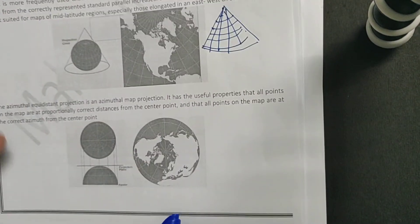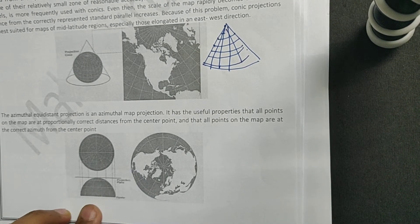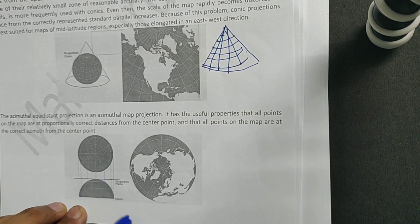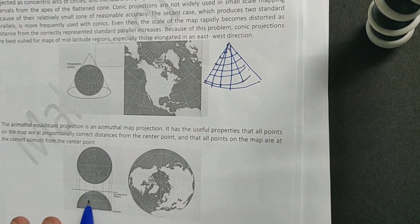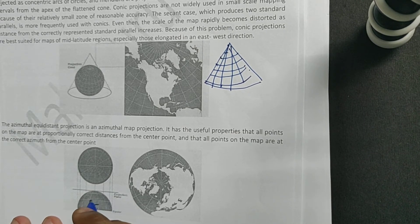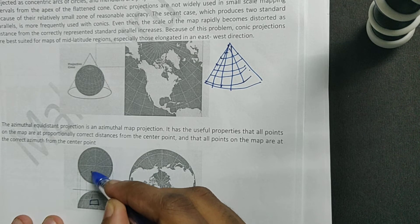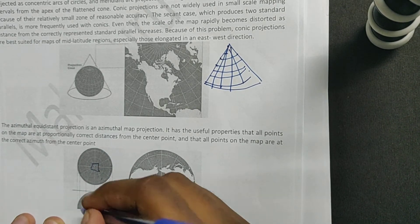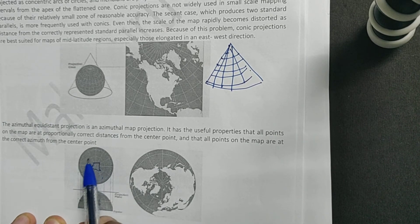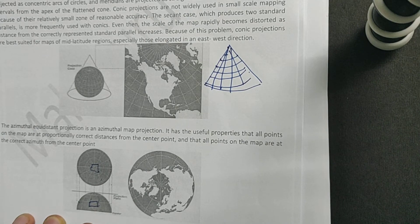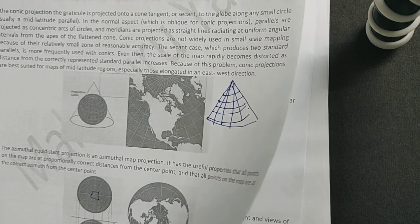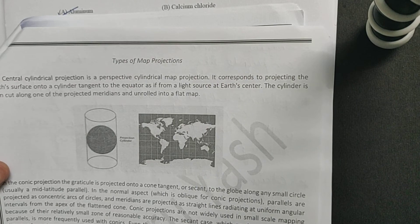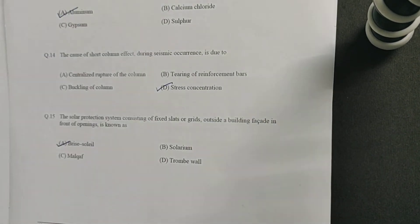The azimuthal equidistant projection takes half the earth — a hemisphere — and projects all the cities onto a circle, resulting in concentric circular map. In the present scenario, most projections we follow use the cylindrical projection for UTM because it is very handy and easy for the general public to understand.